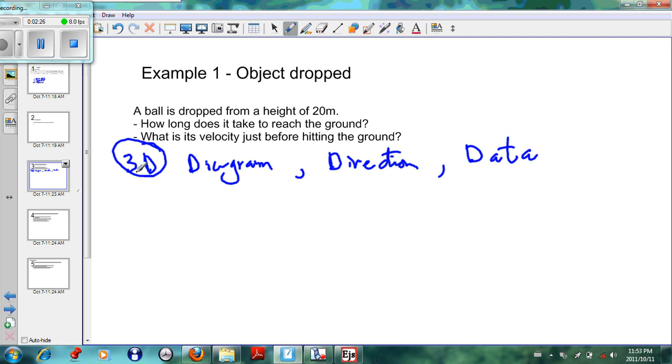Let's look at this first example. A ball is dropped from a height of 20 meters. Here's your ball, dropped from a height to the ground of 20 meters. What we should do first is take the direction. I usually take the downward direction as positive, but you could take the upward direction as positive. So if we have our direction, we've got our diagram.